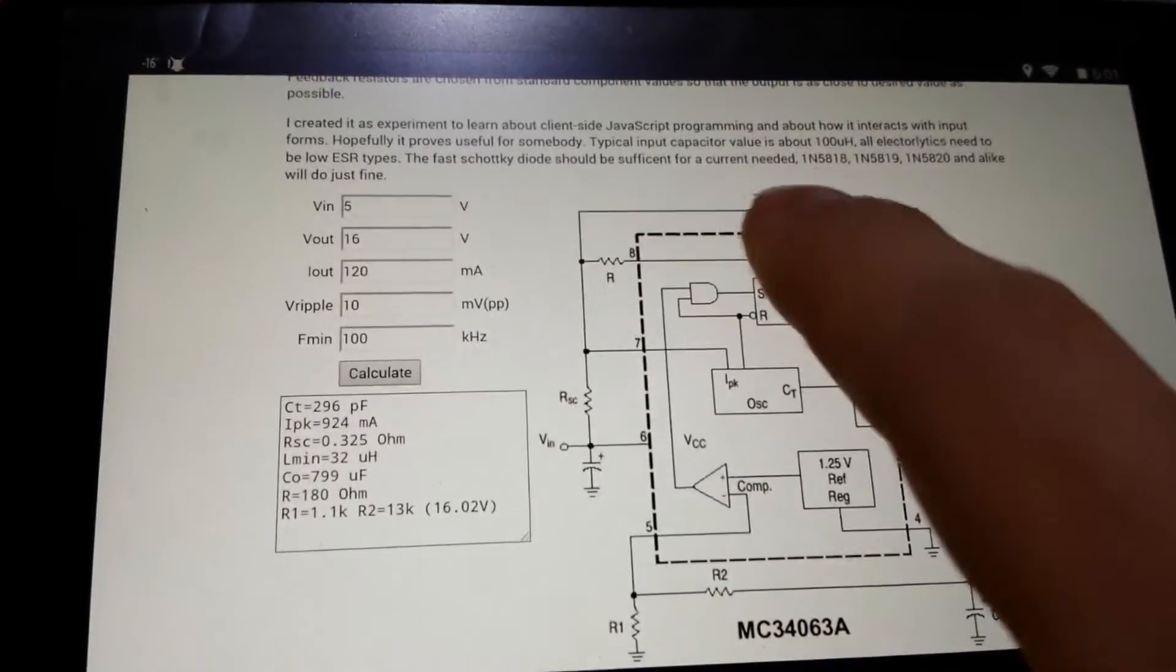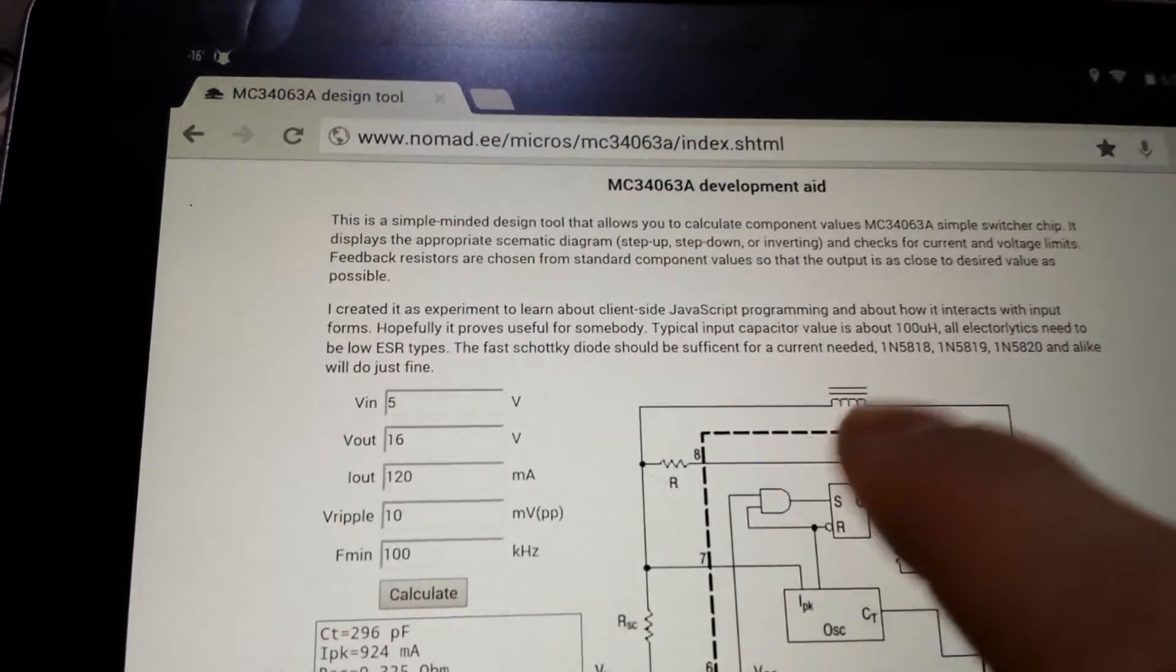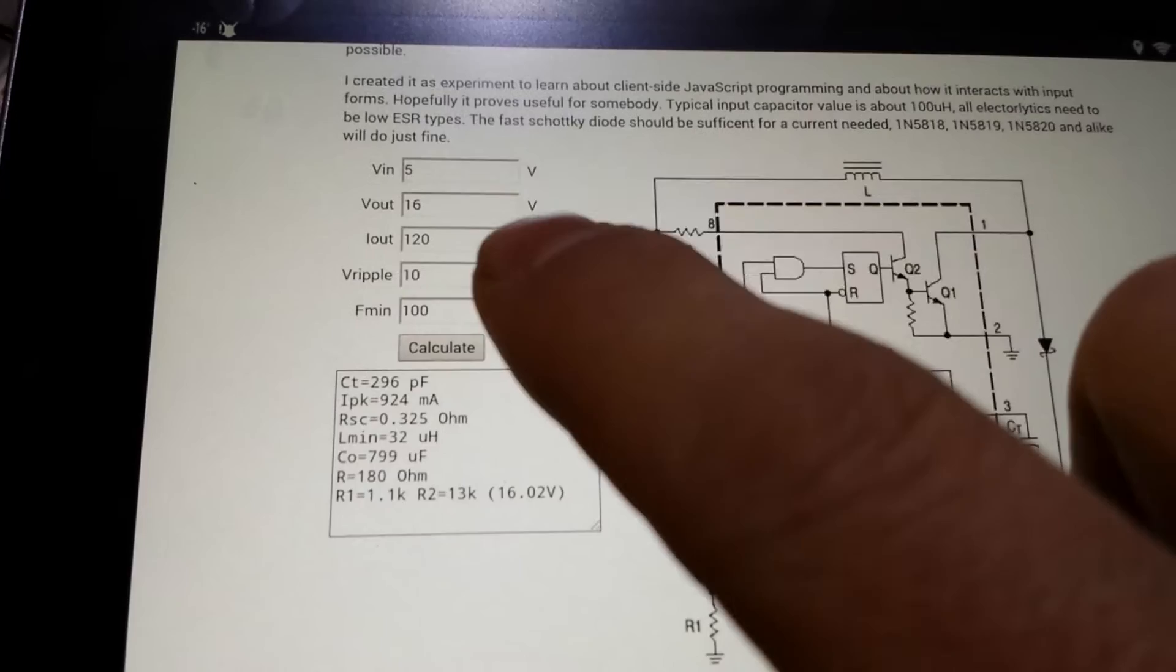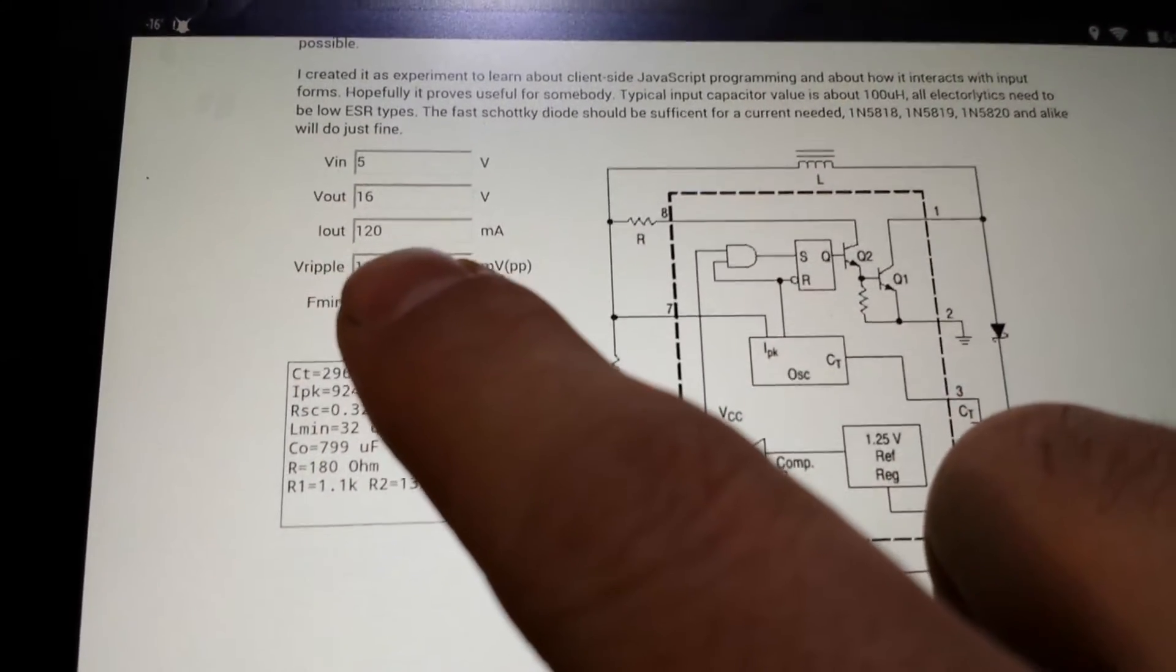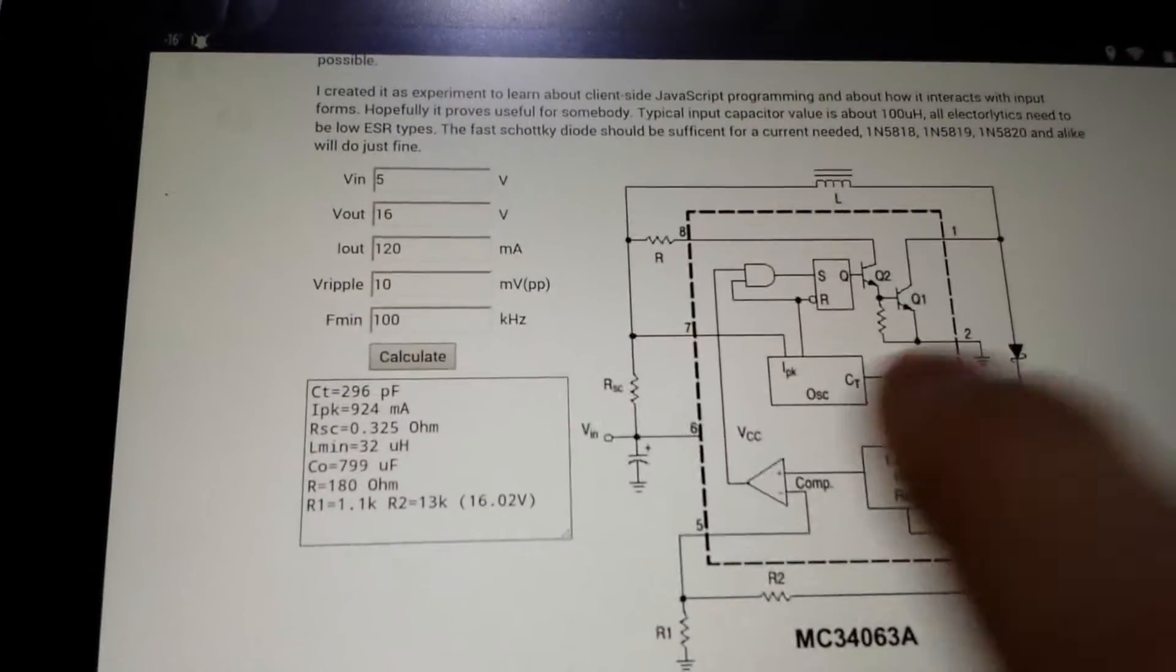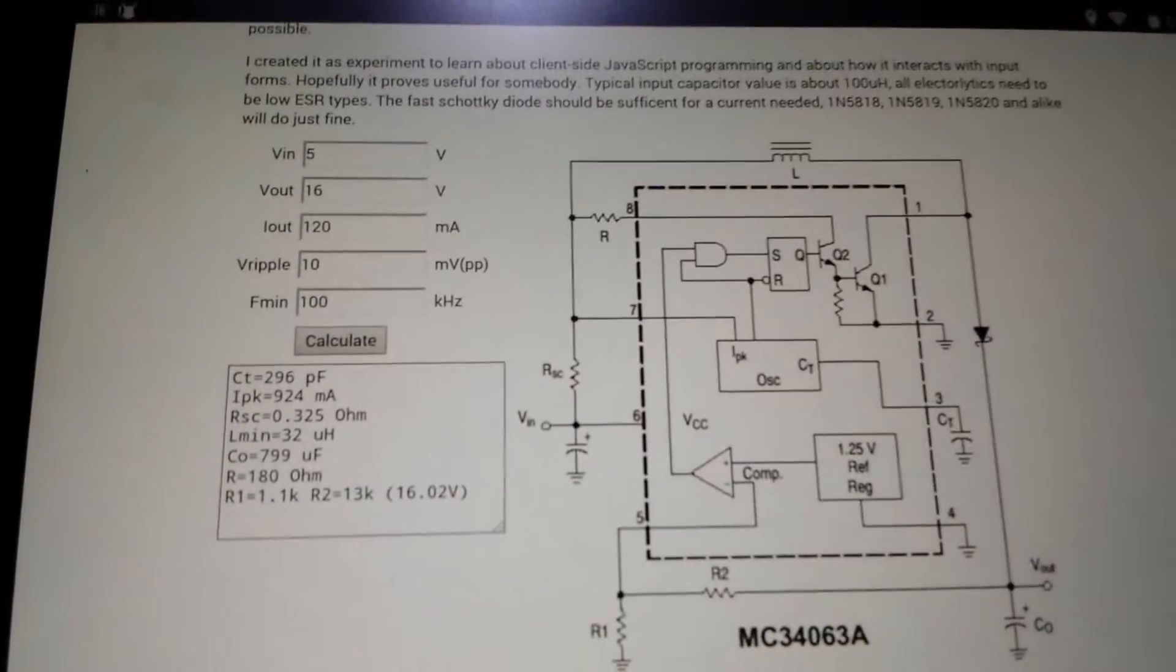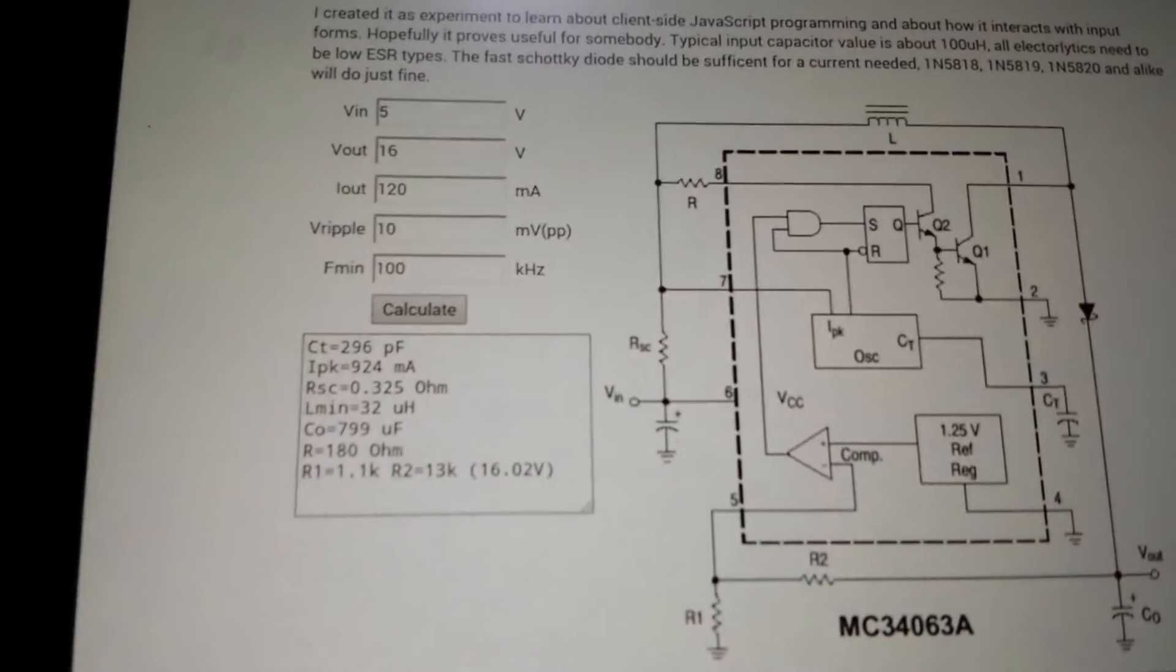And I also found a nice little website yesterday, it's a little development aid, and it's actually quite good. Right now I've put in a couple of values here, 5 volts at my input, I want 16 volts at the output, then I want to be able to pull about 120 milliamps of current through that, I want about 10 millivolts peak to peak of ripple, and my frequency, I want it to be 100 kilohertz, which is the max switching frequency of that chip. And boom, it gives me all the bunch of values here.